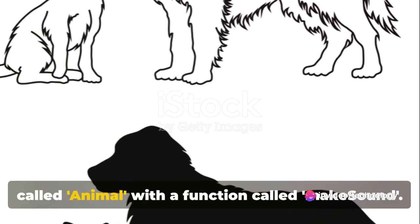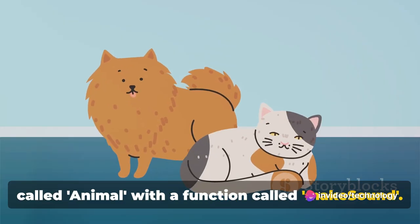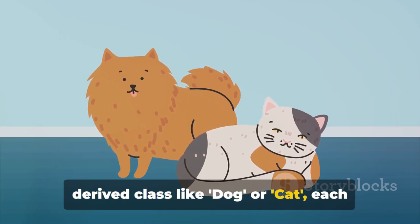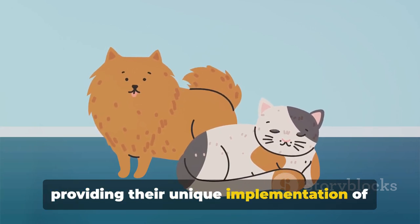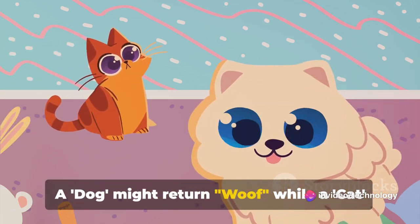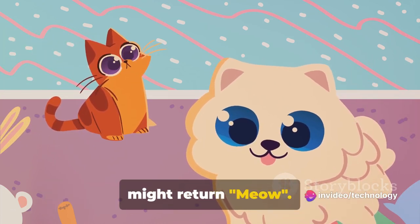For instance, let's imagine a base class called Animal with a function called MakeSound. This function could be overridden in a derived class like Dog or Cat, each providing their unique implementation of the MakeSound function. A Dog might return Woof, while a Cat might return Meow.